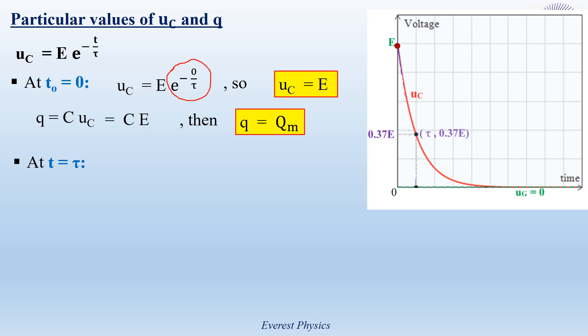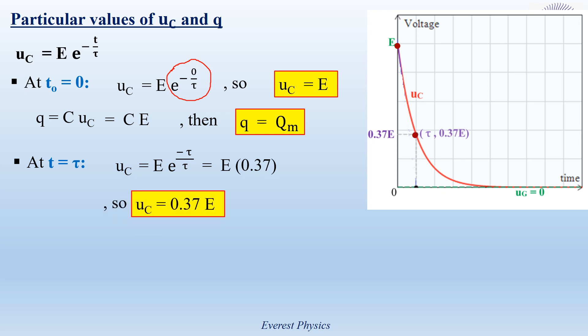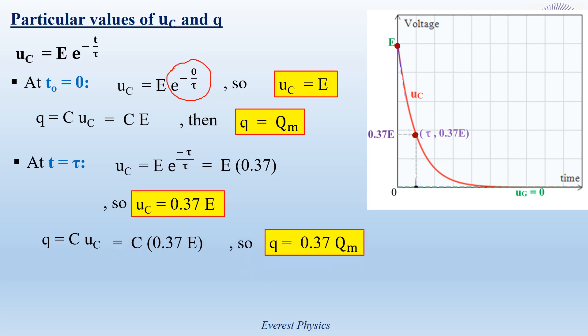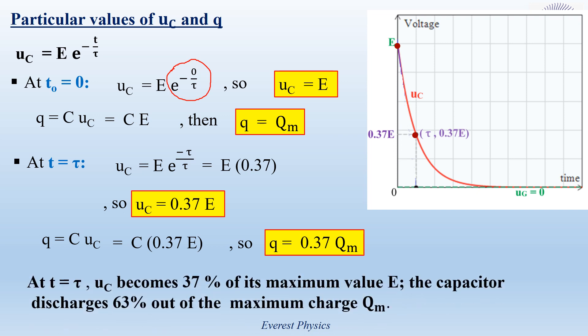At time tau, replacing T equals tau in the expression of UC gives UC equals E times e^(-1), and e^(-1) is approximately equal to 0.37. So at time tau, UC equals 0.37E. The charge Q equals C times UC equals 0.37CE equals 0.37QM. We conclude that during discharging, at time tau, UC becomes 37% of its maximum value E, and the capacitor has discharged 63% of the maximum charge QM.